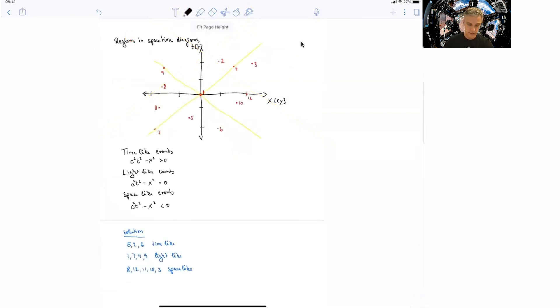So the solutions are given here. Time-like are events 2, 5, and 6. Light-like are the ones which lay on the yellow lines, 1, 7, 4, and 9. And space-like are 8, 12, 11, 10, and 3.